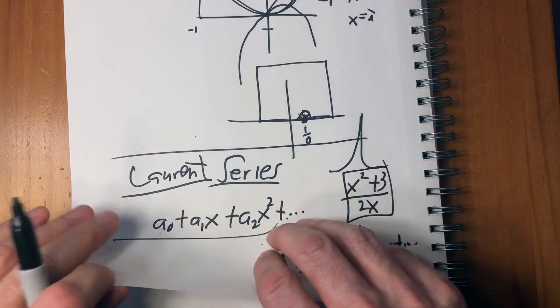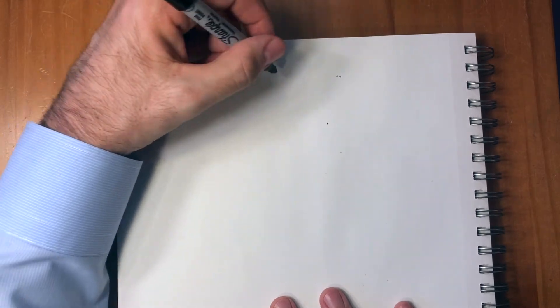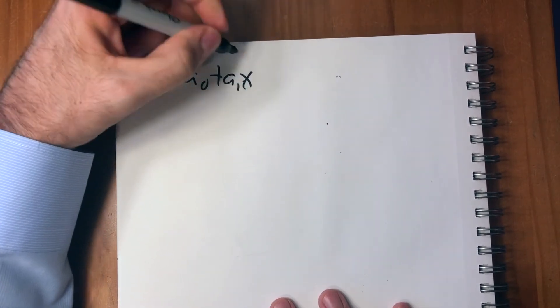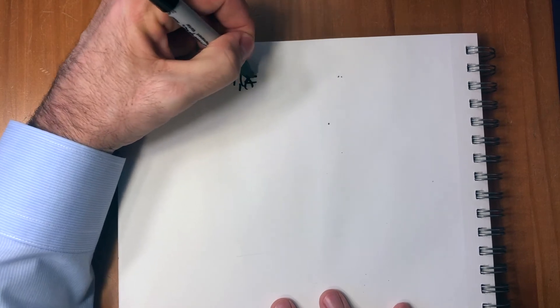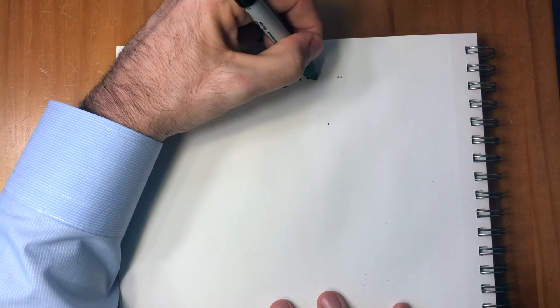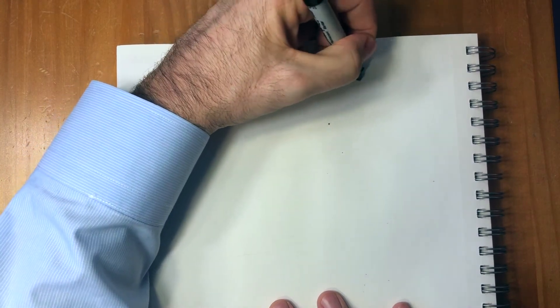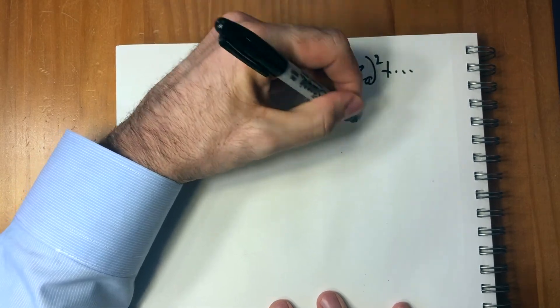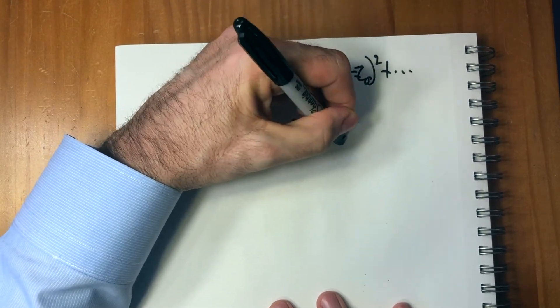And the amazing thing then is that with complex numbers, with complex analysis and using the Cauchy integral formula, you can take those Laurent series. So we have a zero, a one X, I should say Z minus Z zero.